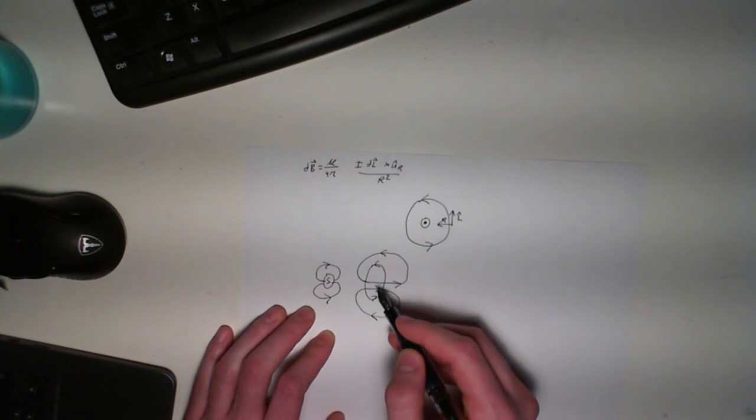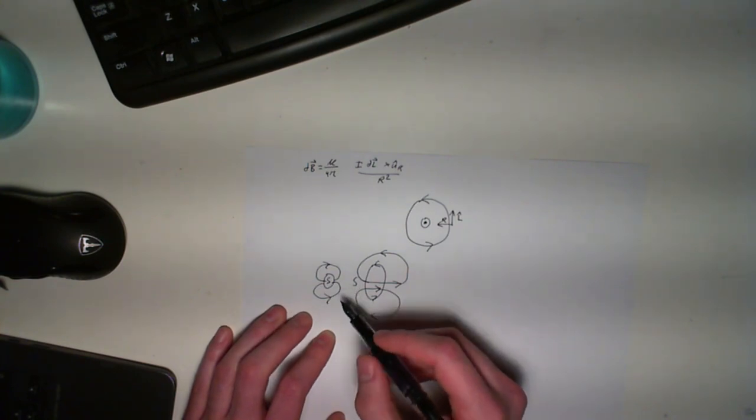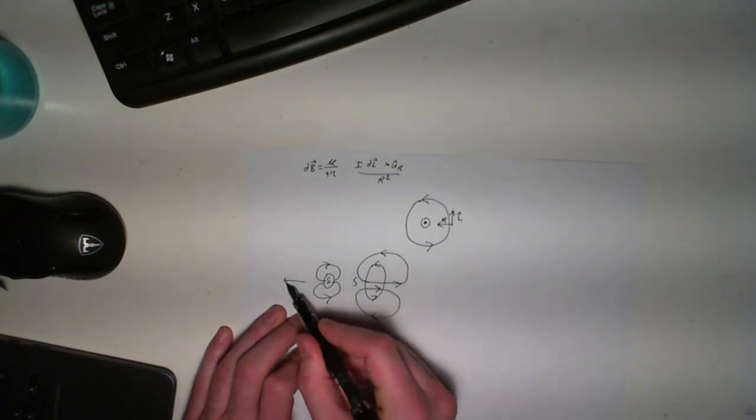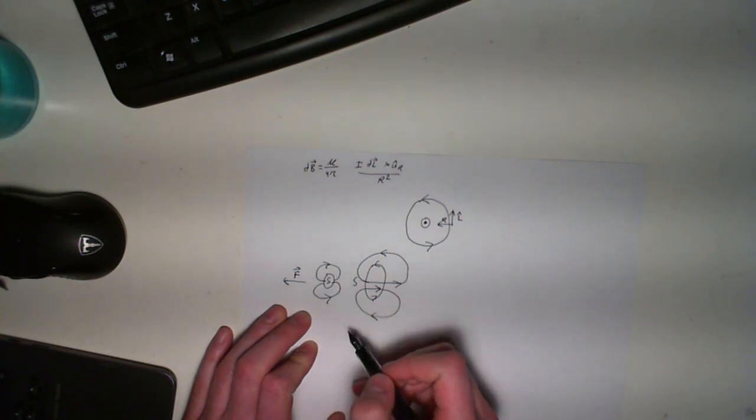So if we think of the coil like a bar magnet, this would be our south pole. Since these are like poles, they are going to repel, creating a force on the permanent magnet pushing it away from the coil.